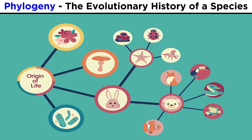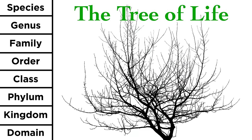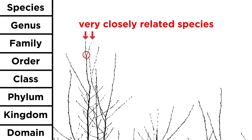Now that we are up to speed with the history of life, we want to know about the phylogeny of various species. This is their evolutionary history, or ancestry, and the discipline of taxonomy is what we use to classify every species in the context of its ancestry. For greater context, we look at the tree of life. This tree has many branches, where different species evolved from a common ancestor. The more recently two species converge as you go down, the more recent their common history, and the more closely related they are.